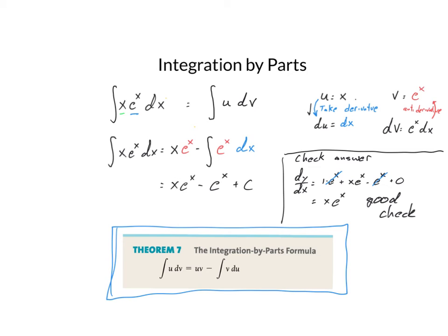We have in your book, theorem 7 gives you, you're always going to use this formula. The integral of u dv is equal to u times v minus the integral of v du.